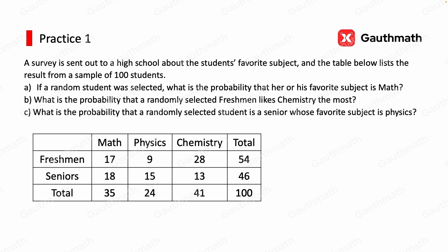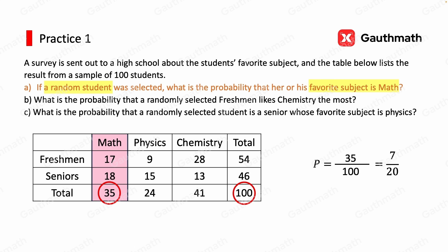We need to find the total possibilities and the desired possibilities. Since a random student was selected, we need the total number of students as the denominator, which is 100. We're looking for students whose favorite subject is math — that is 35. So our probability is 35 over 100, which is 7 over 20.